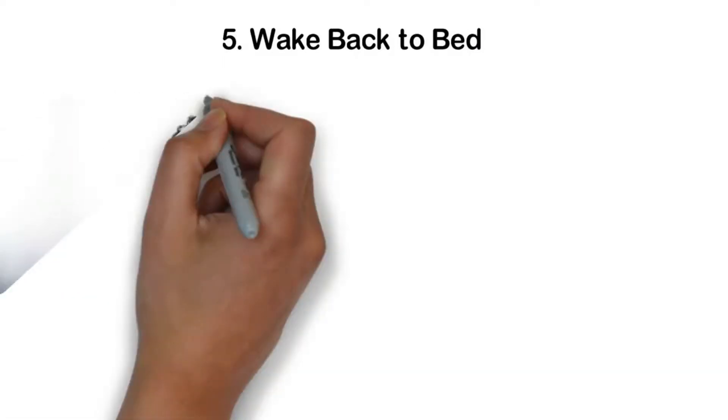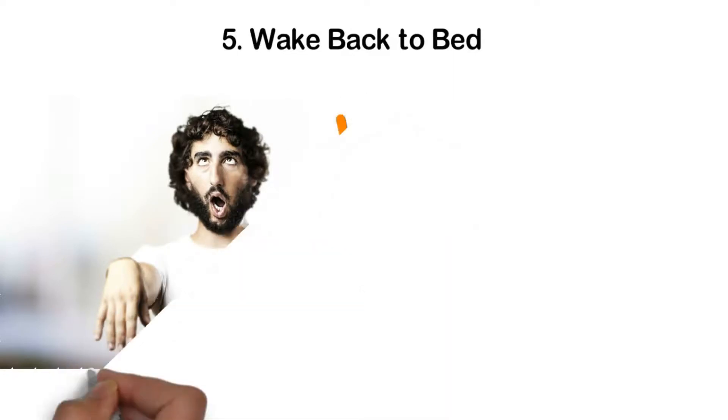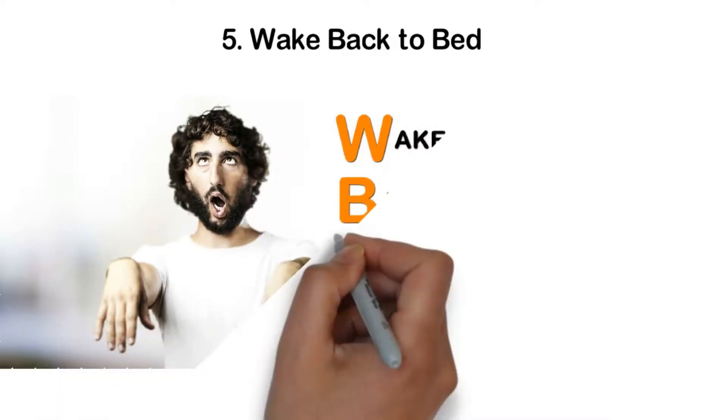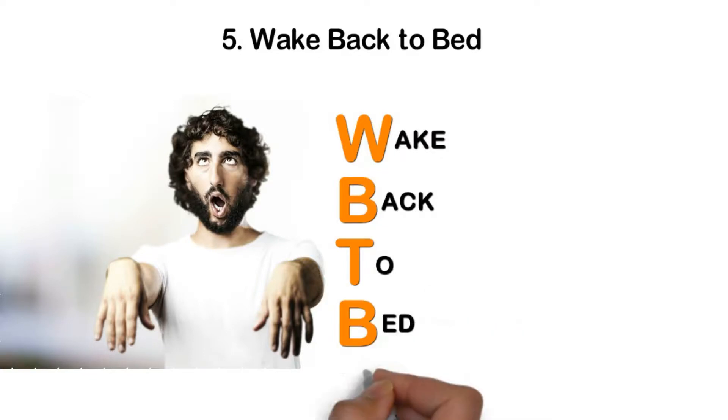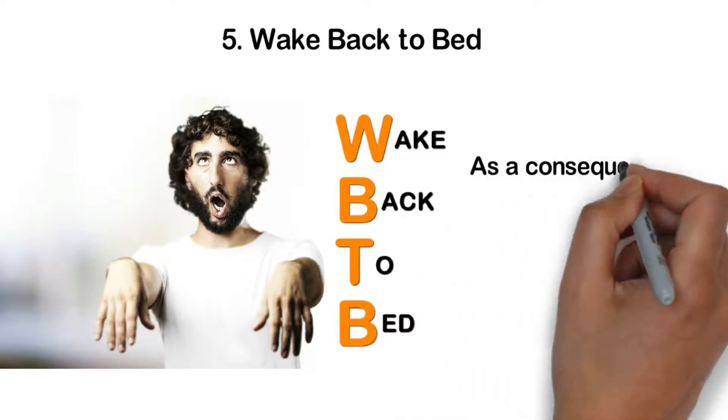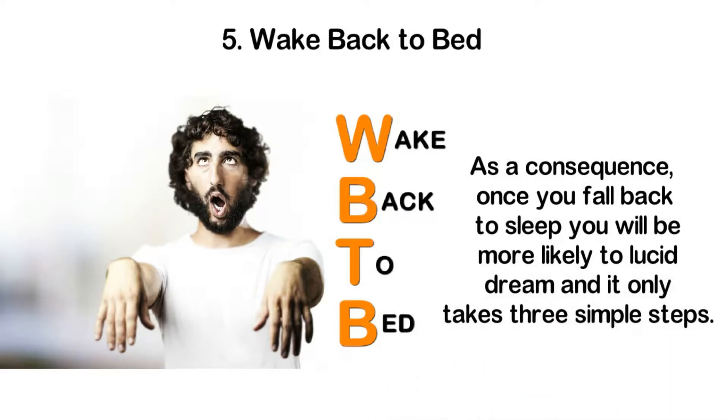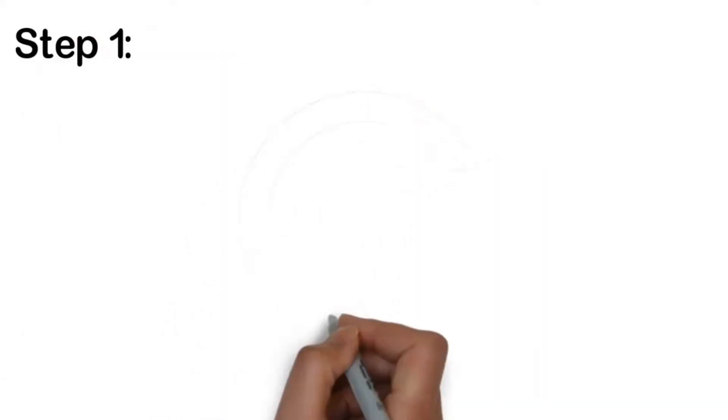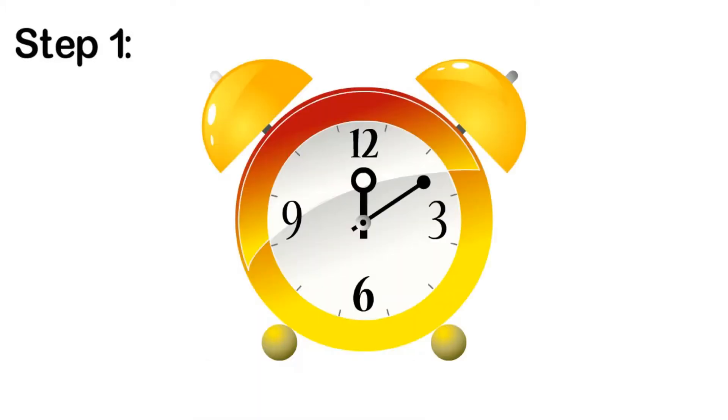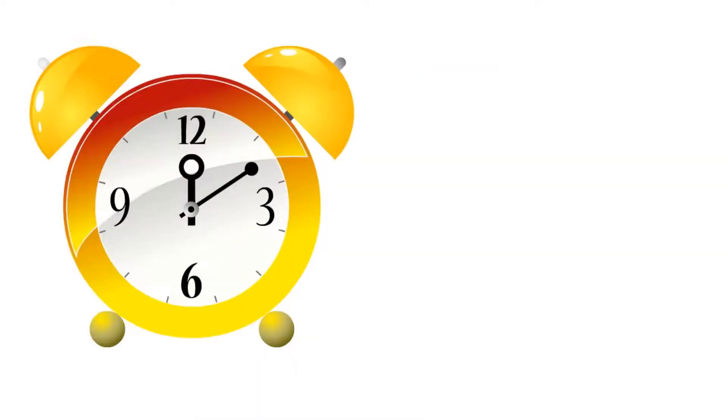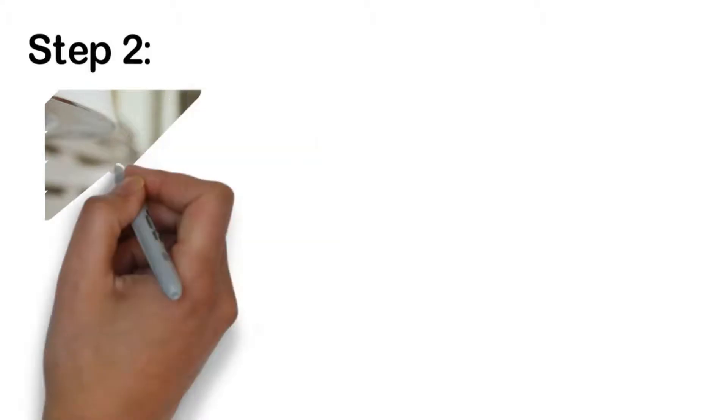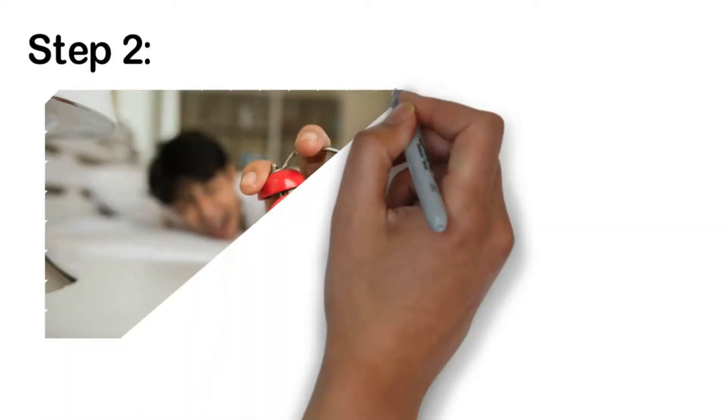Five: Wake Back to Bed. The Wake Back to Bed technique, or WBTB, is a simple method that a lot of people use when learning to lucid dream. It involves getting into REM sleep while you are still conscious and alert. As a consequence, once you fall back to sleep, you will be more likely to lucid dream. And it only takes three simple steps. Step One: go to bed as per your regular schedule and set your alarm five to six hours after your normal bedtime. Step Two: once the alarm rings, get yourself out of bed and ensure that you are fully awake.